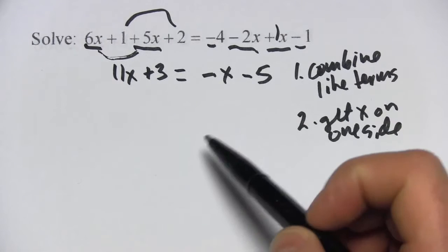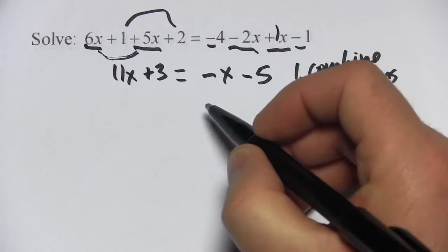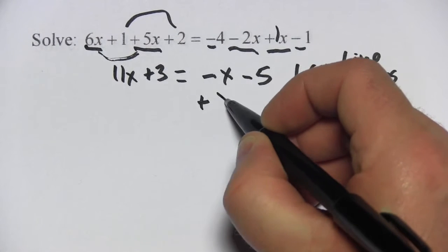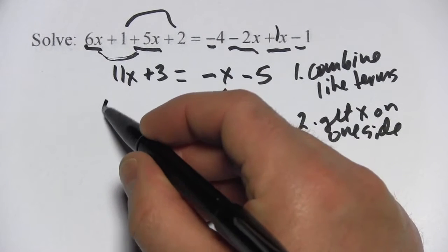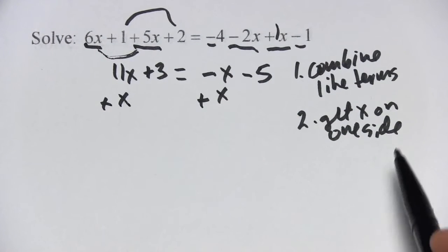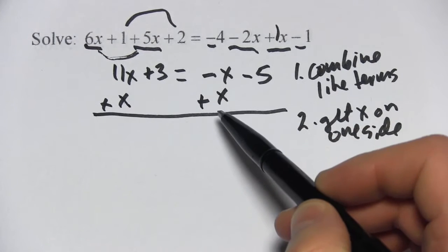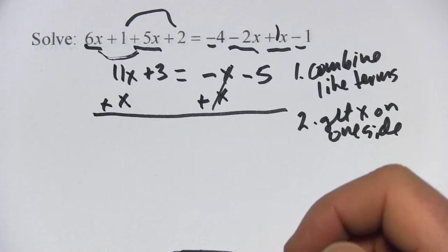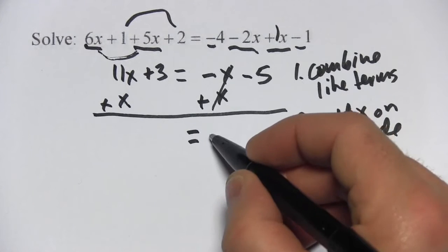In general, I like positive numbers more than negative numbers, so I'm going to try to get rid of this negative 1x. I do that by adding 1x, but if I add 1x to this side, I have to add 1x to that side. So let's do that addition here. A negative x and a positive x come out to be 0, so all that's left on this side of the equation is negative 5.